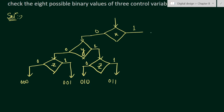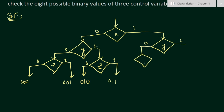Now for the X=1 part, we add another decision box for Y. When Y=0, we add a decision box for Z. When X=1, Y=0, Z=0 it comes this side giving 100, and when Z=1 it gives 101.